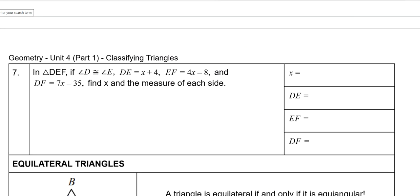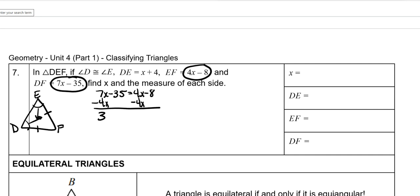Then on this one, they give you DEF, and they tell you that D and E are the congruent ones. So that means that DF is congruent to EF. And those are the two that you set equal to each other. Subtract 4X on both sides. Add 35 to both sides. So X is 9.